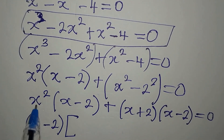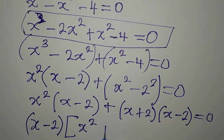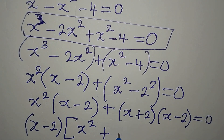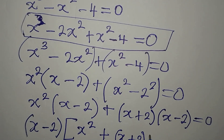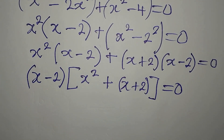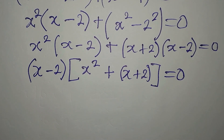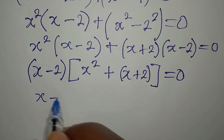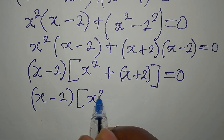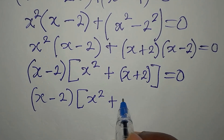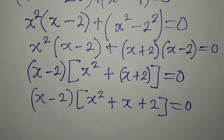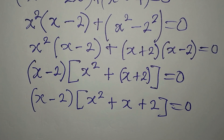After factoring out (x minus 2), what is left from the first group is x squared, and from the second group only x plus 2 is left. We equate everything to zero, so x minus 2 remains the common factor, and the other factor is x squared plus x plus 2.